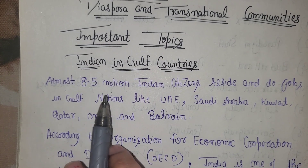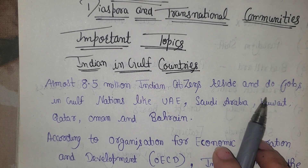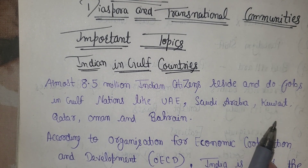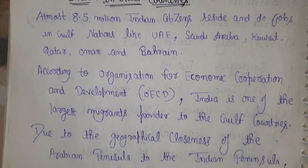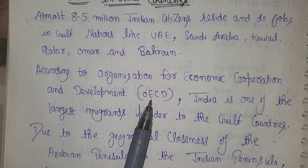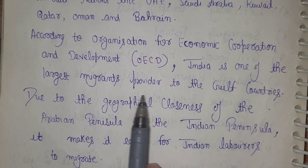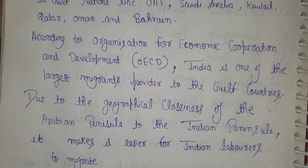Almost 8.5 million Indian citizens reside and go to the Gulf region for jobs — in UAE, Saudi Arabia, Kuwait, Qatar, and Oman. India is one of the largest migrant providers to the Gulf region.